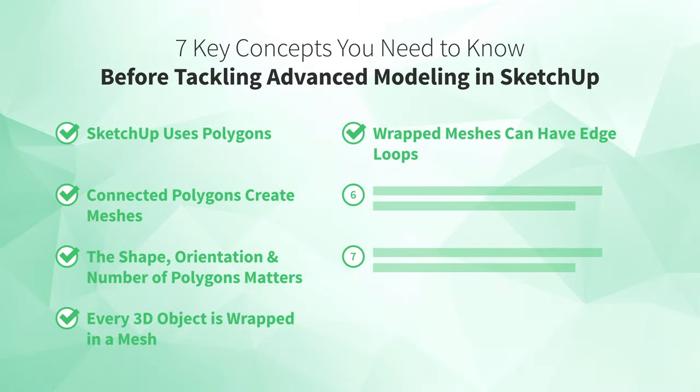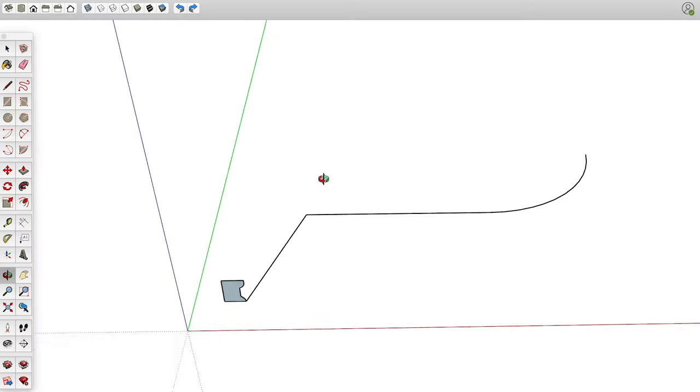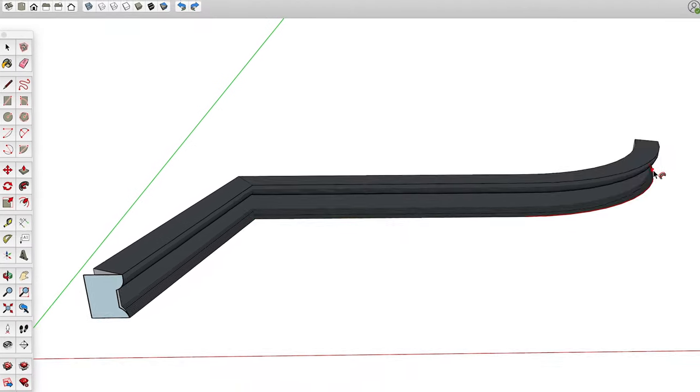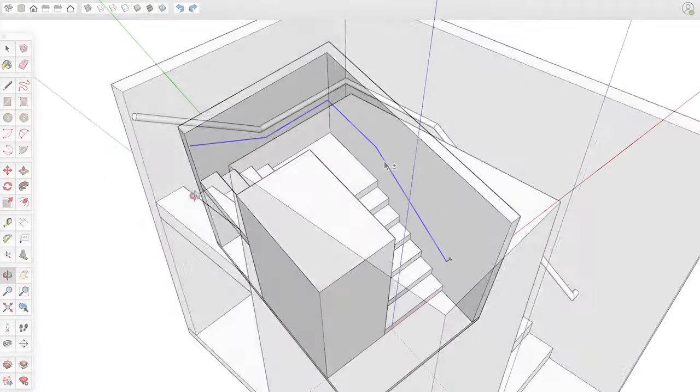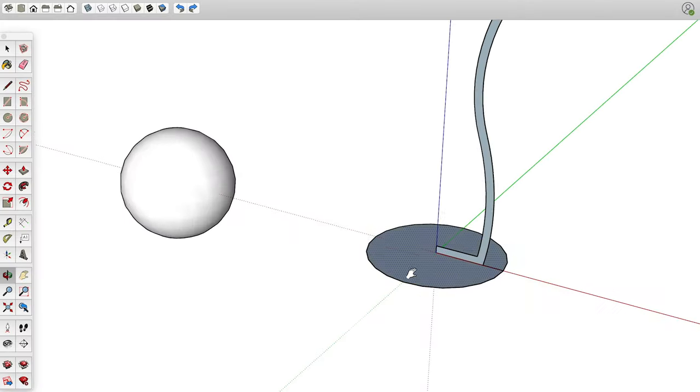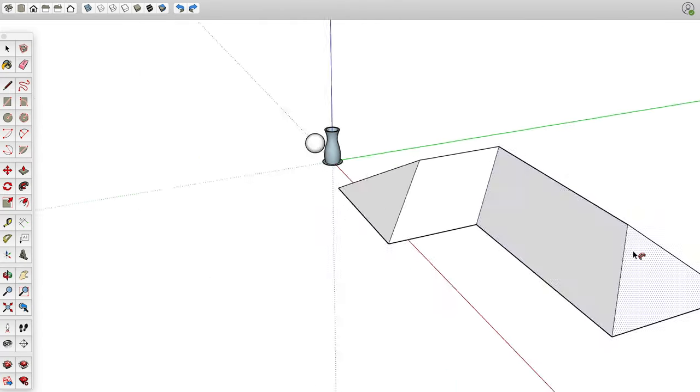Starting with number six: follow me creates edge loops. You might have used the follow me tool or at least seen what it can do. In case you haven't though, here's a quick primer. If you have a path of connected edges and a polygon, you can use the follow me tool to extrude the polygon along the path. The path can be open ended or a closed loop of edges. And the polygon can be any shape you want. With a little imagination and just a few clicks, you can use it to create all sorts of useful and complex models.